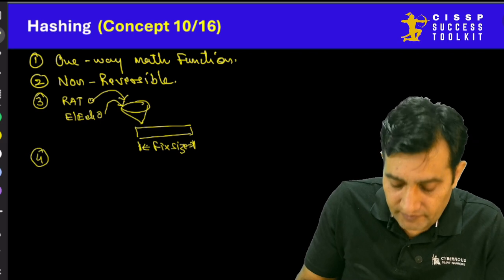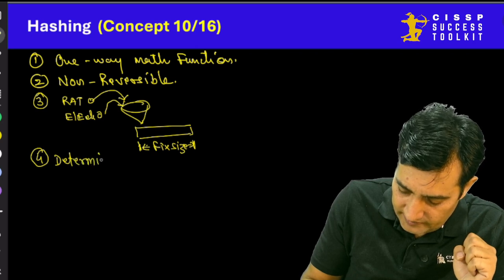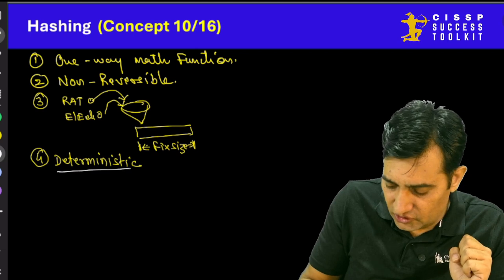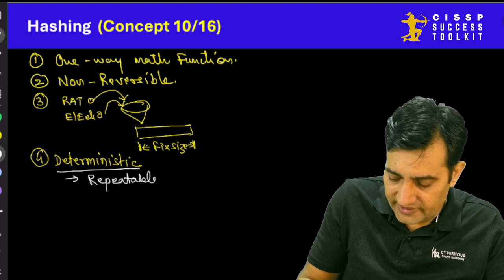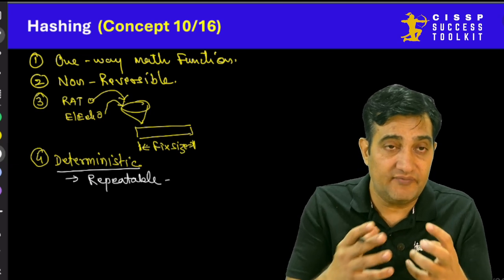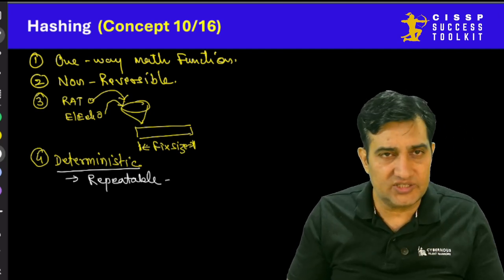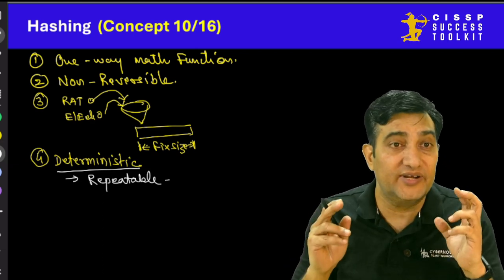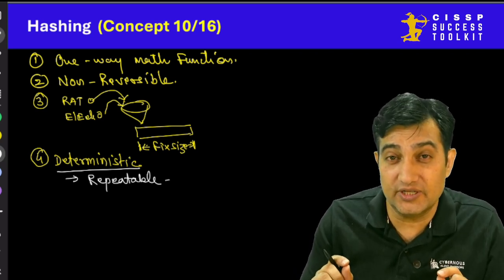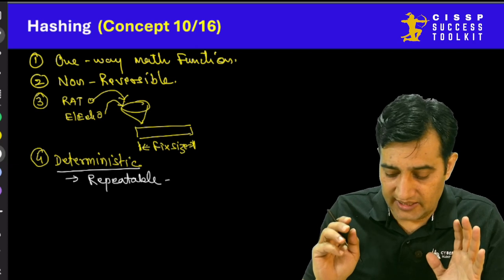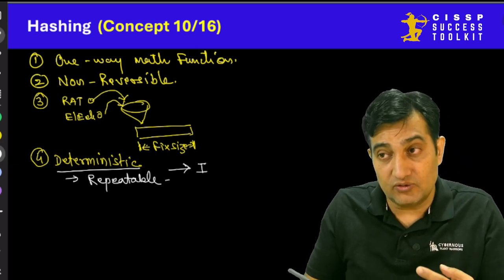The third important property of a hashing algorithm is called deterministic. Don't be carried away by the term — it simply means the output has to be repeatable. If I pass a text through the hashing algorithm on a Windows machine, it will give me a certain output. When I use the same text on a Linux machine, or any other platform, or do it a hundred times, it has to give me the same outcome every time. That is called deterministic.